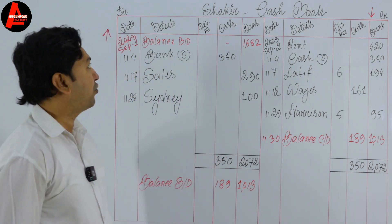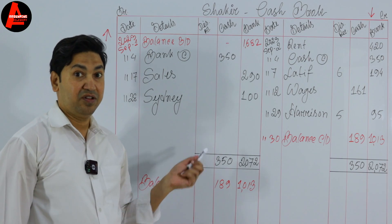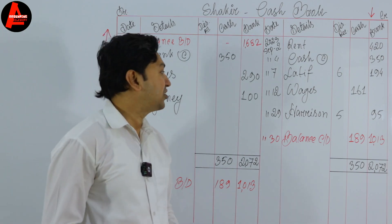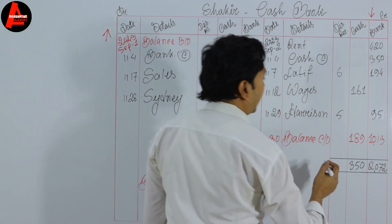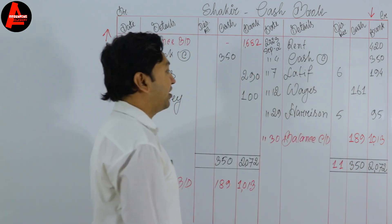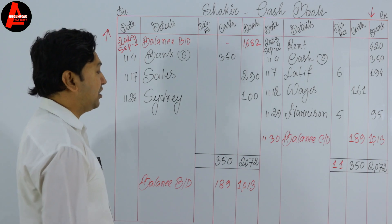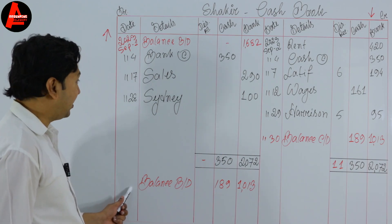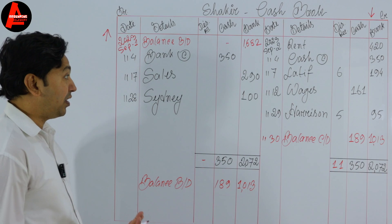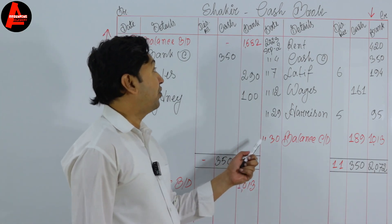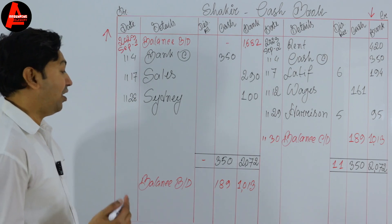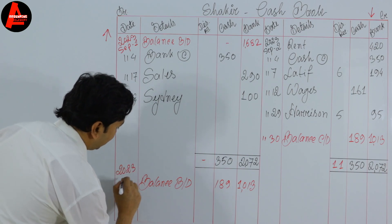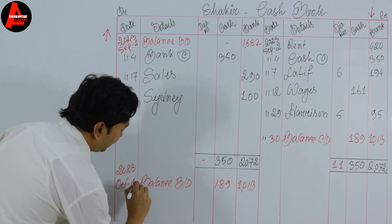For the discount received and discount allowed columns, we do not balance them — we just total them. On the credit side, discount received is 6 plus 5 equals 11 dollars. We did not allow any discount, so the discount allowed column is empty. The date for balance b/d is the first day of the next month. Since we completed September, the first day will be 1 October 2023.